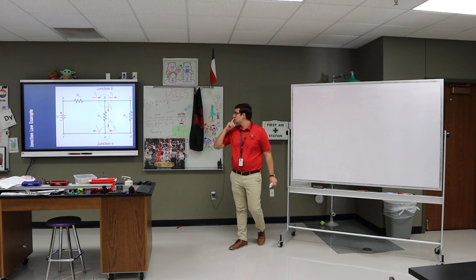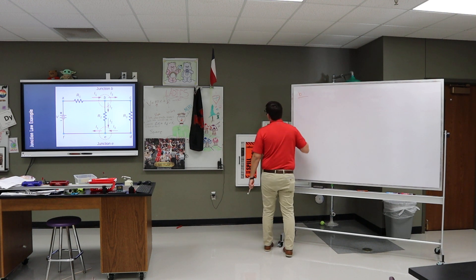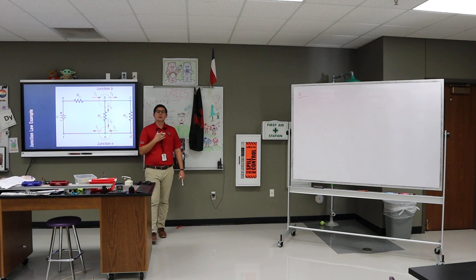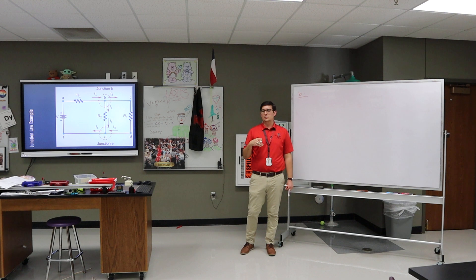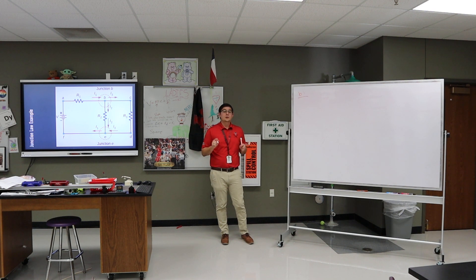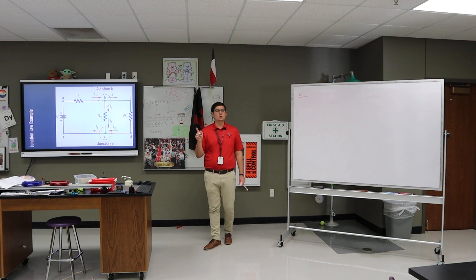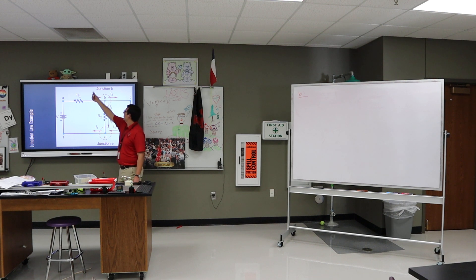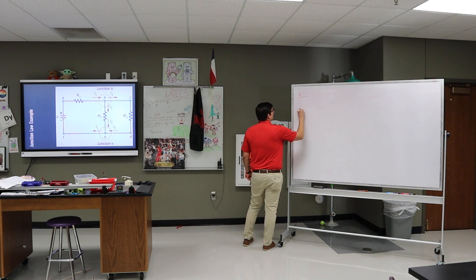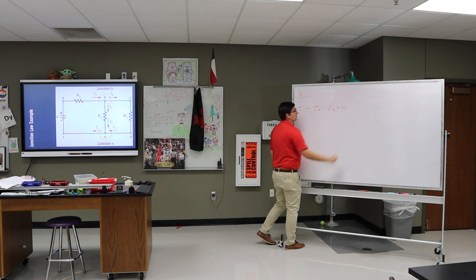All you have to do is go through and map out how the current is flowing — knowing where it comes together and goes apart — and then write mathematical statements. For junction B, all of these currents have to add to zero. The way I typically do this: anything I think is going into the junction I count as positive, and anything going out I count as negative. So I1 is going in — positive — and I2 and I3 are both coming out, so it's I1 minus I2 minus I3 equals zero.